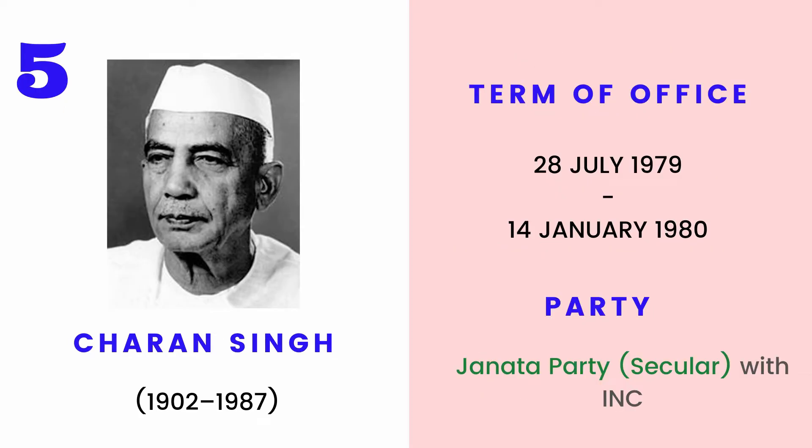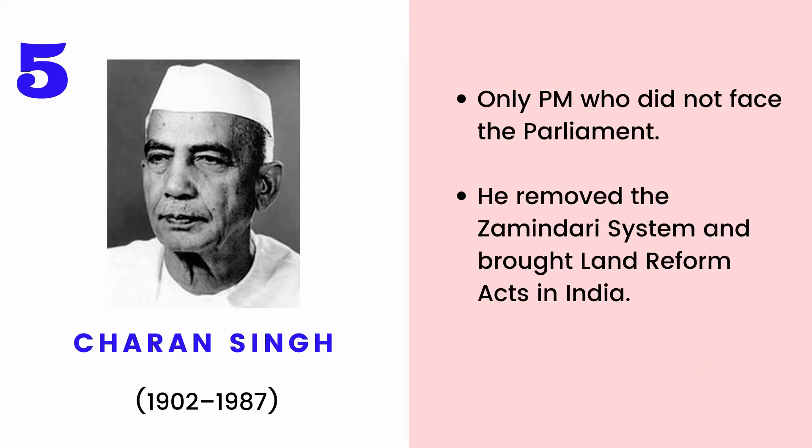Chaudhary Charan Singh served as the fifth Prime Minister of India between 1979 and 1980. He was the only PM who did not face Parliament. He removed the Zamindari system and brought in Land Reform Acts.